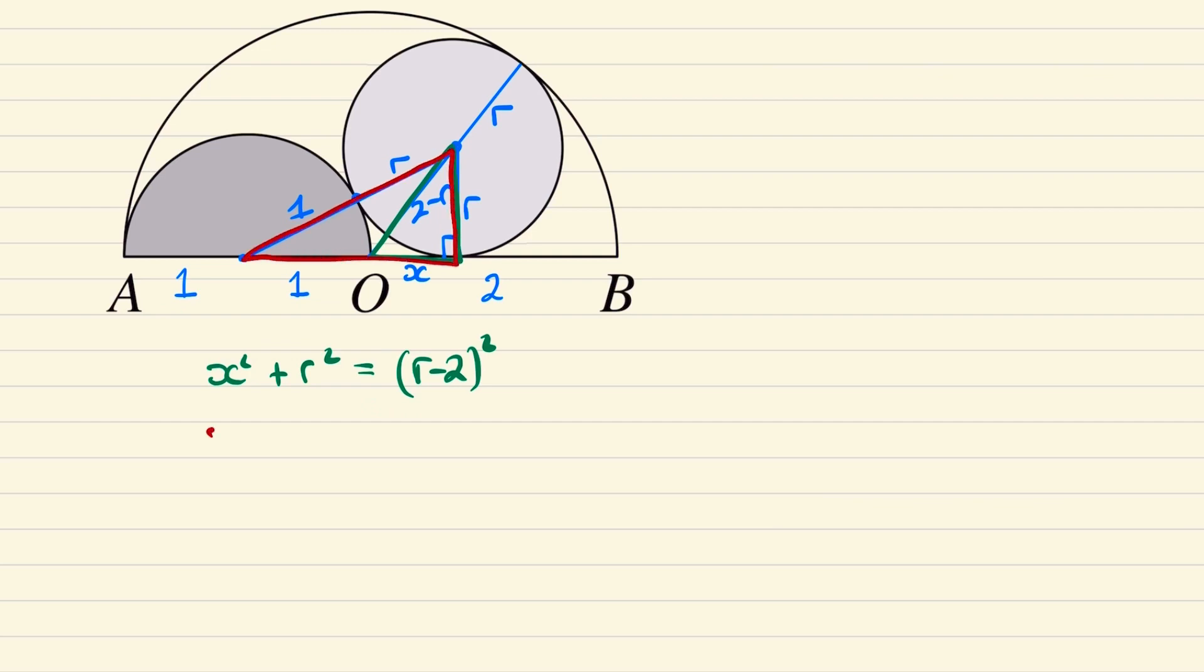And our second right angle triangle is this larger one which we can write as x plus 1 squared add r squared is equal to r add 1 squared, and expanding the equation in green we can show x squared is equal to 4 minus 4r.